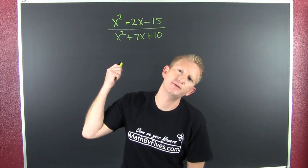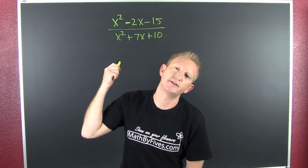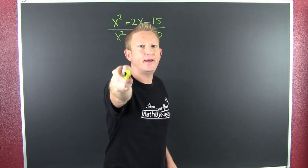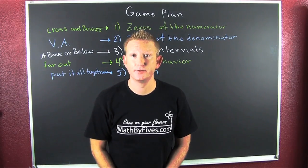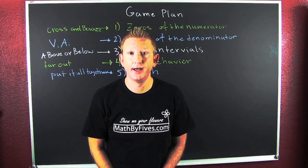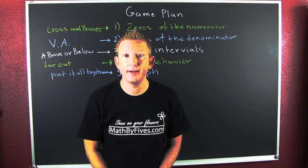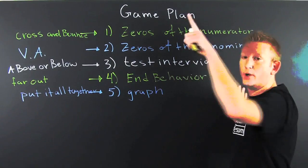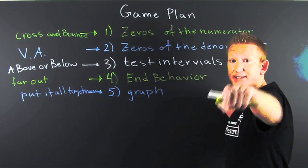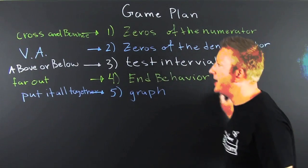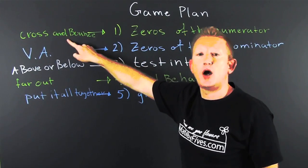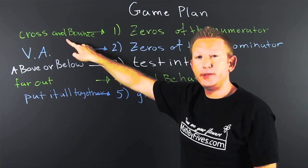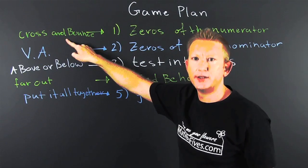I want to graph this rational expression but first I need a game plan. So what do we want to do? One, we want to get the zeros of the numerator. Why? Because that's where it's gonna cross or bounce the x-axis — when I say 'it' I mean the graph of your rational expression.